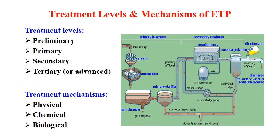Now about treatment levels and mechanisms of ETP. There are four treatment levels: preliminary treatment, primary treatment, secondary treatment, and tertiary or advanced treatment. These are general treatment levels for effluents from all industries. The treatment mechanisms in technical terms are physical treatment, chemical treatment, and biological treatment.